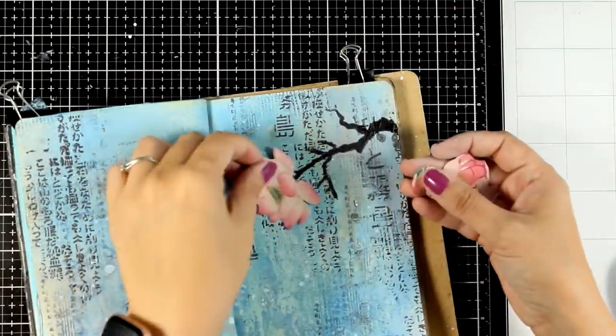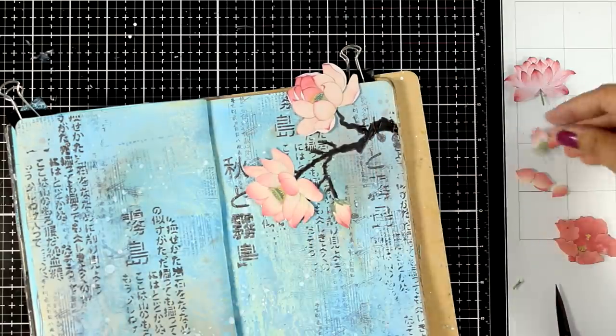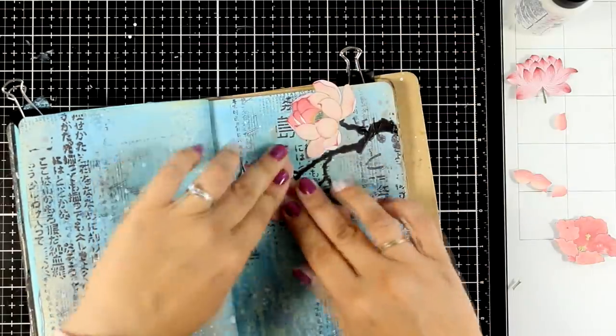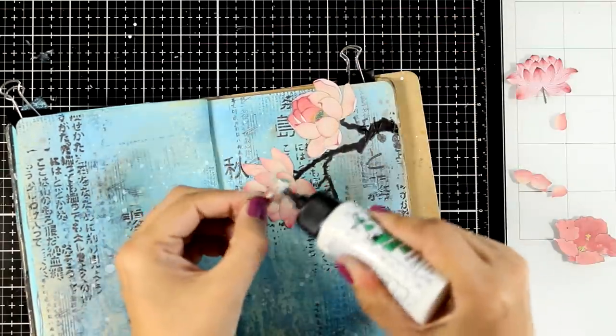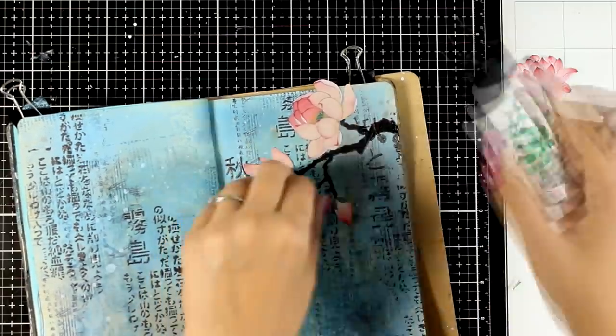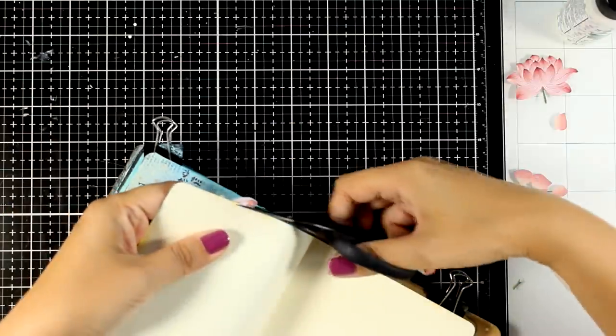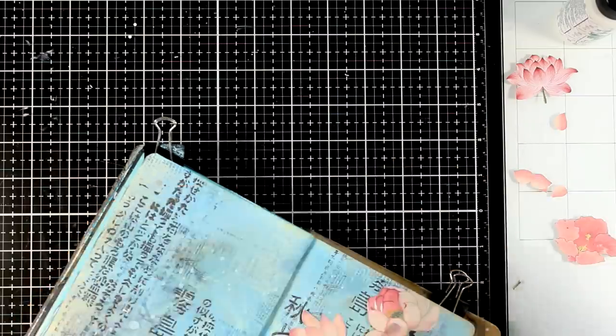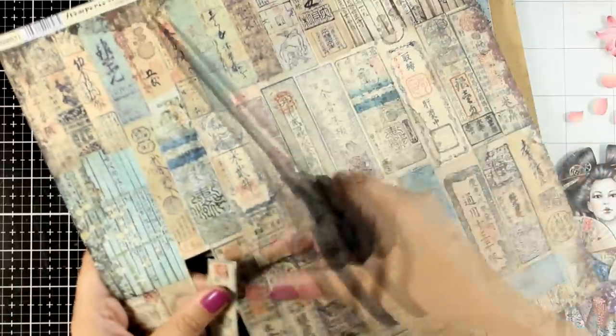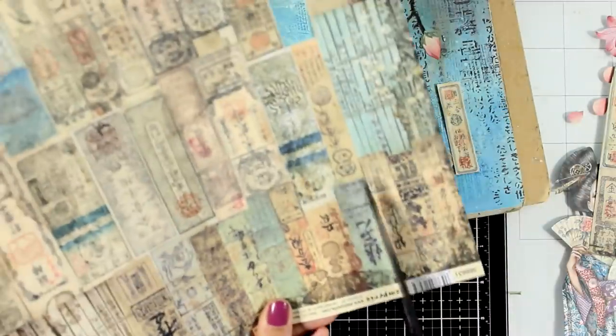And then I have the flowers here that I cut out I'm going to play with them decide where they're going to live and then I'm going to stick them down I get asked a lot about the types of glue that I use I just use whatever I have handy on my craft mat depending of course on the technique that I'm planning to do here it doesn't really matter glue stick white glue or even matte medium would work just fine.